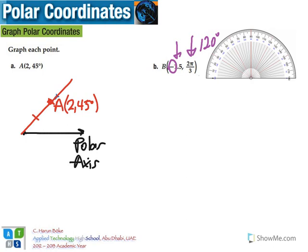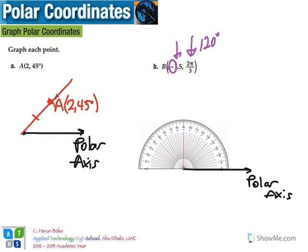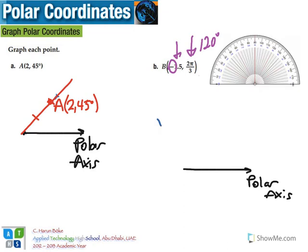Now, we are going to draw our polar axis again. Then, we are going to measure the angle of 120 degrees, which is here, and we will draw from here a line touching the pole.